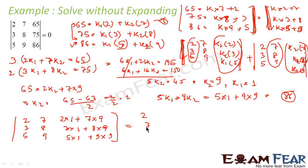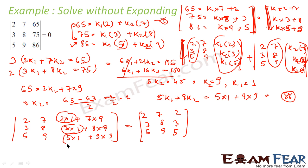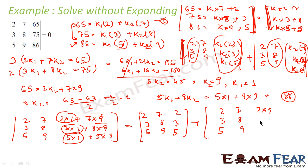Breaking the determinant: the first part has columns 2, 3, 5 and 7, 8, 9, with the third column also becoming 2, 3, 5 — so those two columns are identical, and this determinant is 0.